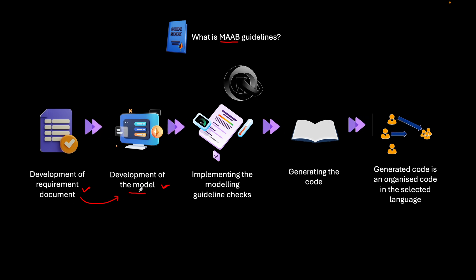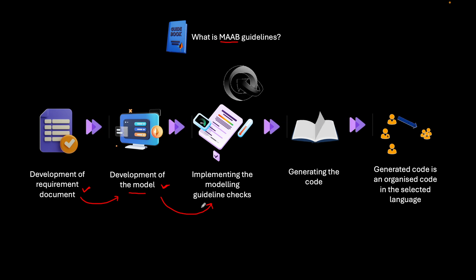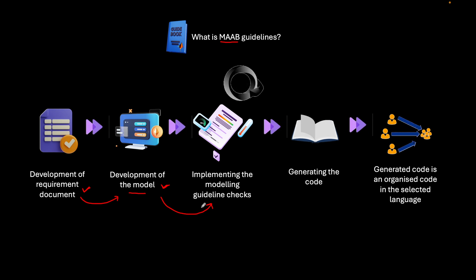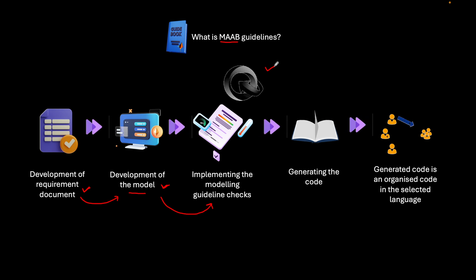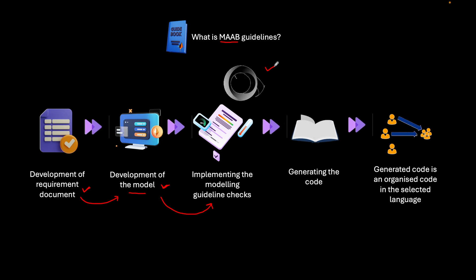Once the model development is done — following the requirement document — we implement the guideline check. The MATLAB advisory board gives a set of guidelines to check on the model you have created. Rather than manually checking everything, the Model Advisory Check uses automated scripts that scan everything inside your model and tell you what is wrong based on the guidelines, along with the fixes the tool can apply.